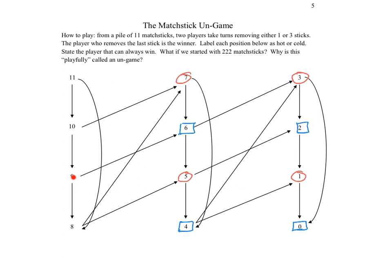Now that six is cold, working backwards along that arrow, we can label nine as hot. For position eight: it plays into five and seven, both of which are hot, making eight cold. Working backwards along the arrows for eight all the way back to 11, that makes the 11th position hot. For completeness, position 10 only plays into hot positions, so that one's cold.